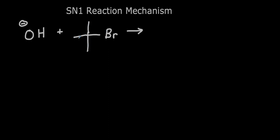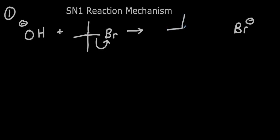These bulky alkyl halides undergo substitution by a completely different mechanism. In the first step, we break the C-Br bond — turning a bonding pair into a non-bonding pair — putting a negative charge on the bromide. But we're also going to be putting a positive charge on this carbon, forming what we call a carbocation. We still have a methyl group on each side, but this central carbon only has three bonds on it, which is why it has a formal positive charge.